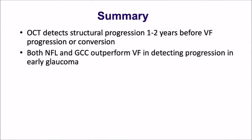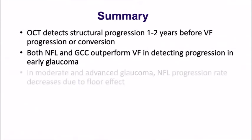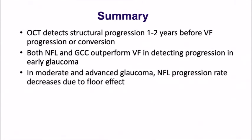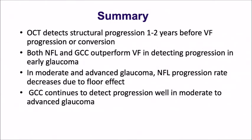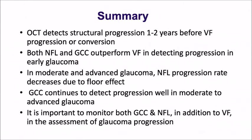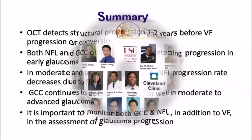OCT will detect structural progression about one or two years before the visual field. Both the nerve fiber layer and the ganglion cell complex or the ganglion cell interplexiform layer measurement outperform the visual field in detecting progression in early glaucoma. In moderate and advanced glaucoma, the nerve fiber layer progression decreases or goes away because of this floor effect. The GCC gives you a little bit more, but not a whole lot. It's important to monitor both the GCC and the nerve fiber layer, as well as the visual field, especially in advanced glaucoma.